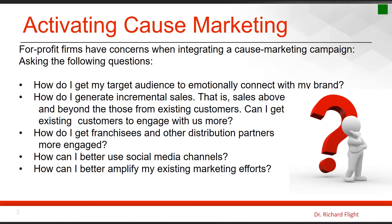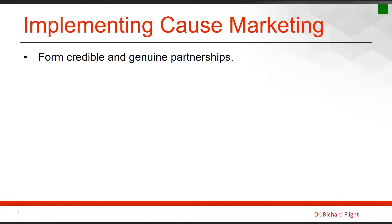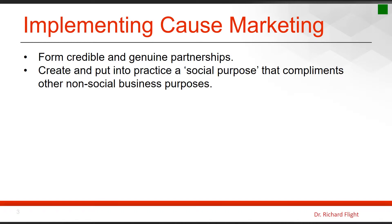As we look at integrating and developing a relationship with a nonprofit, if I'm the for-profit, I need to think about how this relationship will impact many of the other functions within the organization. Certain elements will help guide these decisions moving forward. First: forming credible and genuine partnerships. If we are sincere in our relationship with a nonprofit, that sincerity and genuineness will be clear to our market, and engagement will be a lot stronger.